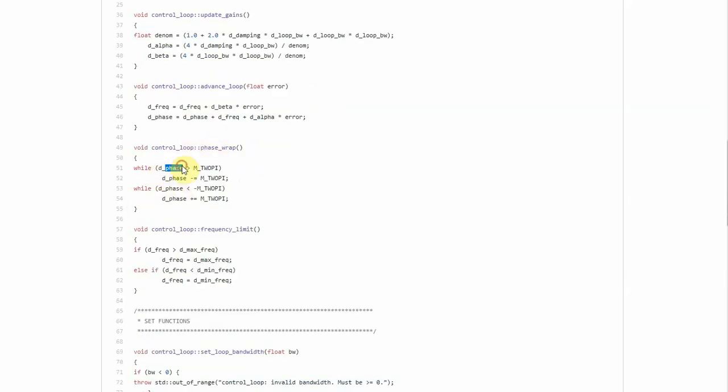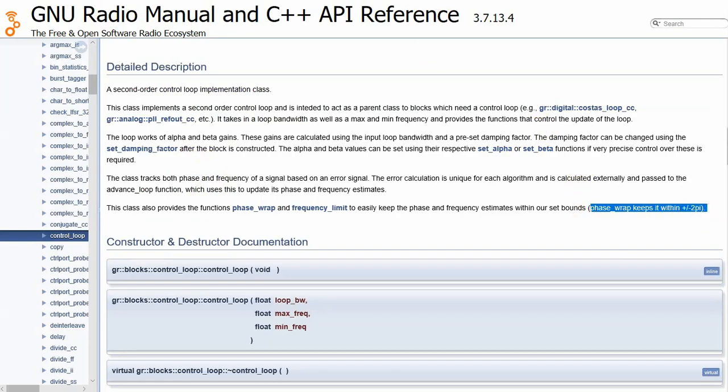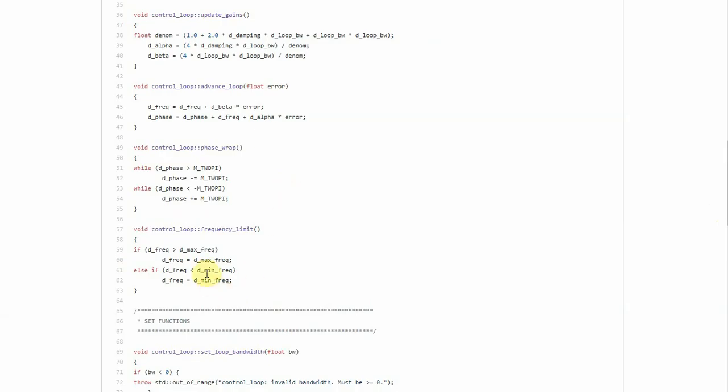Next, phase wrap and frequency limits are the functions called here. Phase wrap just makes sure that if it is greater than 2 pi, it subtracts 2 pi. And if it is less than minus 2 pi, phase wrap keeps it within plus minus 2 pi as we saw here. Finally, the frequency limit is a function which if the frequency is greater than max frequency, it sets it to the max frequency. And if it is less than the min frequency, it sets it to the min frequency.